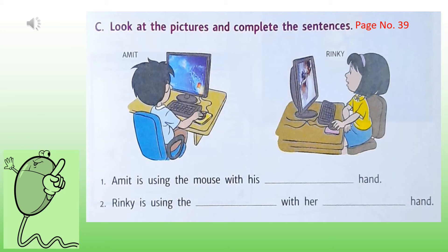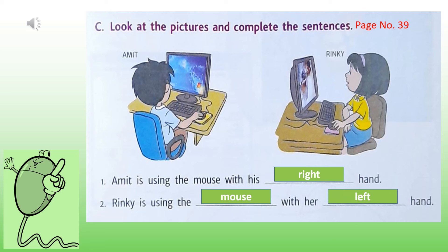On page number 39 of your book there is an exercise: look at the pictures and complete the sentences. Here you can see that Amit is using the mouse with his right hand, and Rinky is using the mouse with her left hand. You can see in which direction Rinky has placed the mouse.